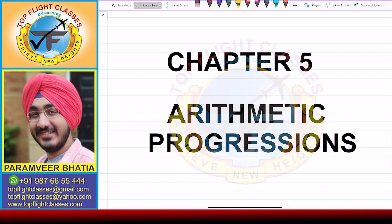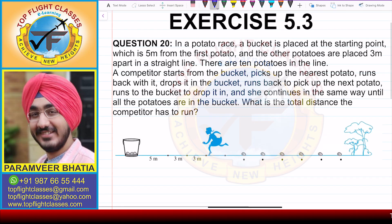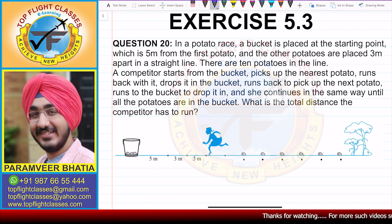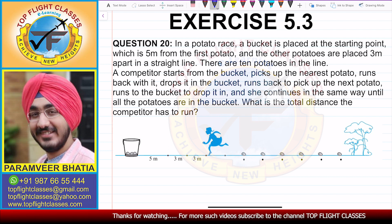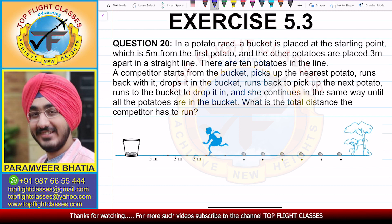Hey guys, welcome to my channel Top Flight Classes. In this video, we are going to solve question number 20 of exercise 5.3. Question number 20 says: in a potato race, a bucket is placed at the starting point which is 5 meters from the first potato, and the other potatoes are placed 3 meters apart in a straight line.